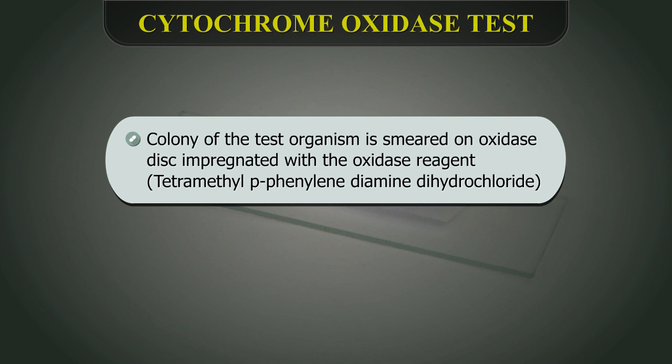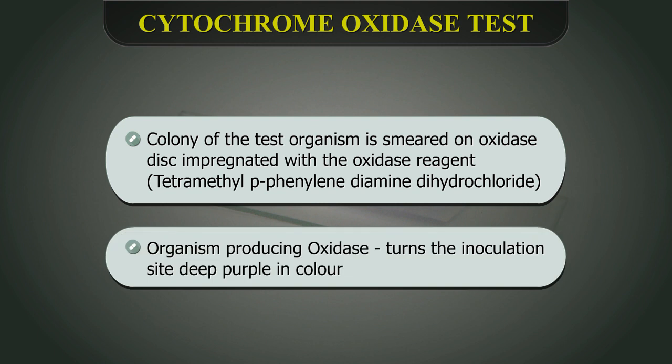A colony of the test organism is smeared on an oxidase disc or filter paper strips impregnated with the oxidase reagent, which is tetramethyl-paraphenylene-diamine-dihydrochloride. If the organism is oxidase producing, it turns the inoculation site deep purple in colour within 5-10 seconds.